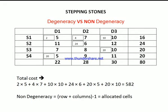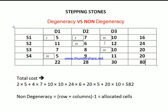We have four suppliers and three demand destinations. Those boxes are the number of units to be transferred — for example, from source one to destination one at a cost of five per unit. To check degeneracy, we take the number of rows plus columns minus one: four rows plus three columns minus one equals six allocated cells. Counting the allocated cells: one, two, three, four, five, six.